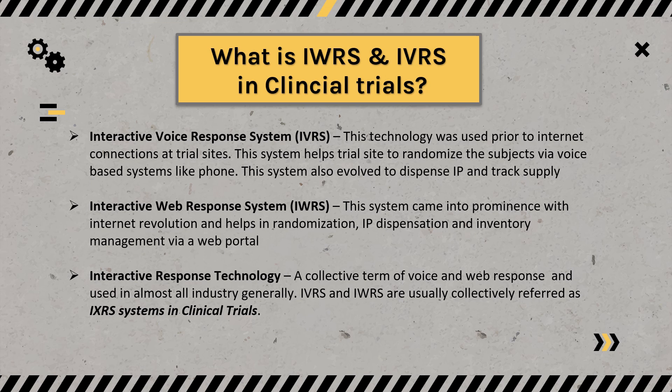For example, whenever you have any kind of issue, you dial a customer care number and the automated system says press one or press two — that kind of system is generally an IVRS system. When it comes to IWRS, it is the next generation called the Interactive Web Response System. This system came into prominence after the internet revolution and plays an important role in subject randomization, IP dispensation, and inventory management via a web portal — using a computer and a web portal, you can randomize the subject.